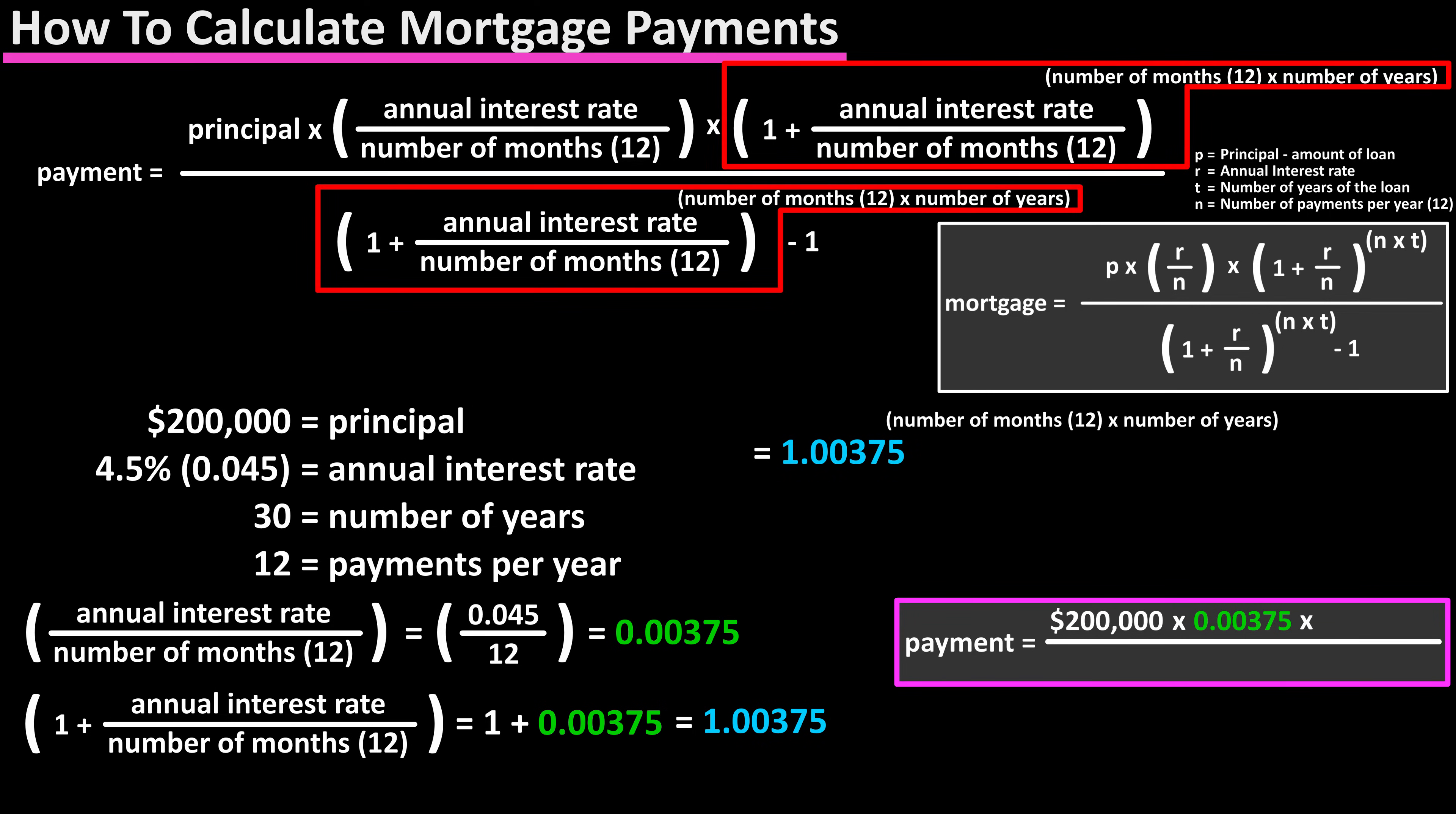Next we need to calculate this raised to the number of months times the number of years, which is 12 payments per year times 30 years, which is 360. Next we can calculate this whole value of 1 plus annual percentage rate divided by the number of months in a year, raised to the number of months times the number of years, so we have 1.00375 raised to 360.